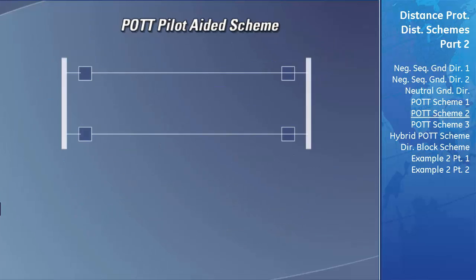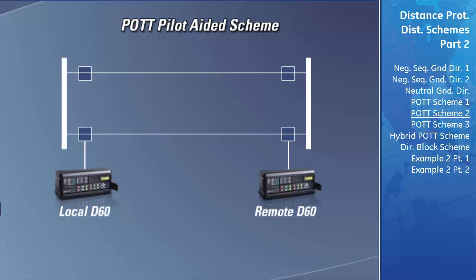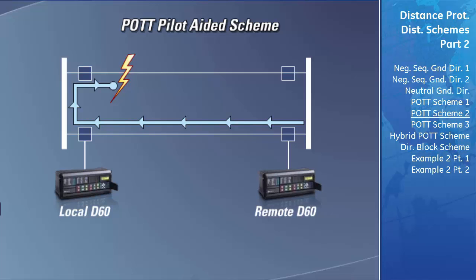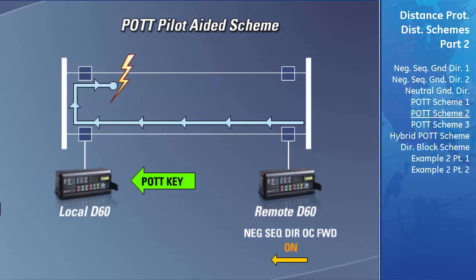Some additional logic has been added to the POTT scheme to add extra security for transmission lines connected in parallel to other transmission lines. If a fault occurs on the parallel transmission line, the remote D60 detects ground current flowing in the forward direction and sends a permissive key to the local D60. The local D60 detects ground current flowing in the reverse direction, which does not meet the POTT scheme criteria, and thus the local relay will not trip.